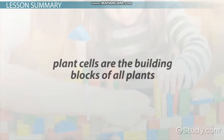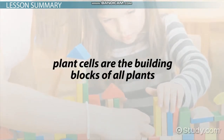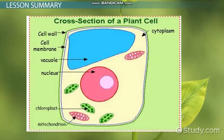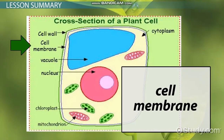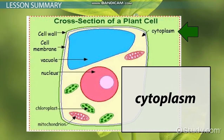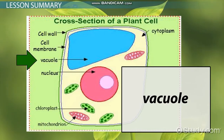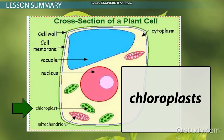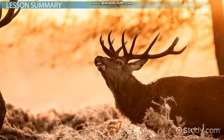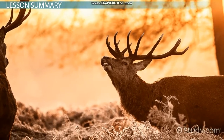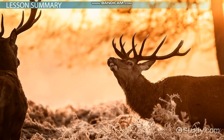Plant cells are the building blocks of all plants. The main parts of the plant cell include the cell wall, cell membrane, cytoplasm, nucleus, vacuole, and chloroplasts. Although animal cells are similar to plant cells, animal cells do not have the cell wall or chloroplasts.